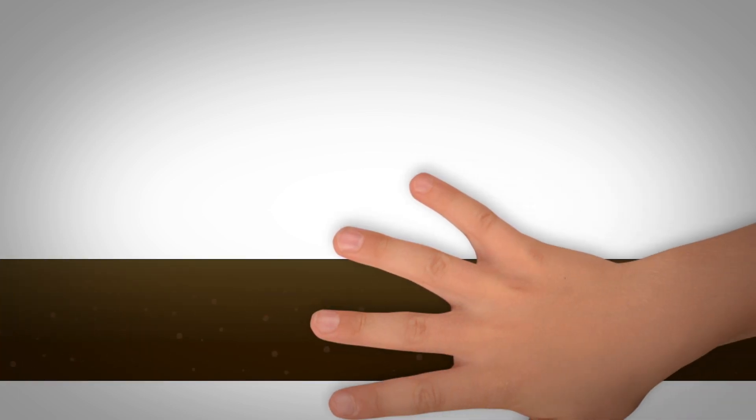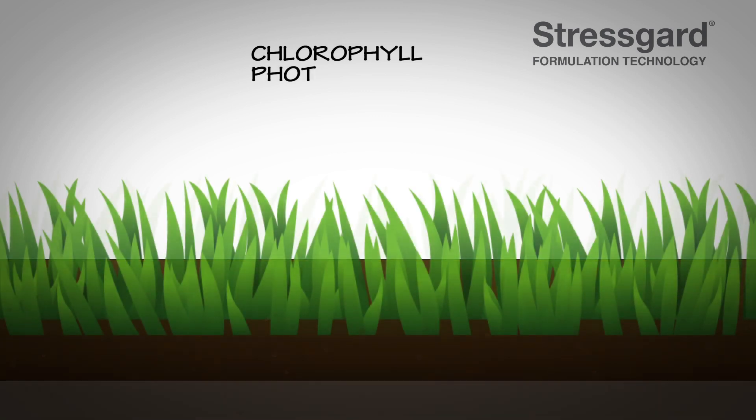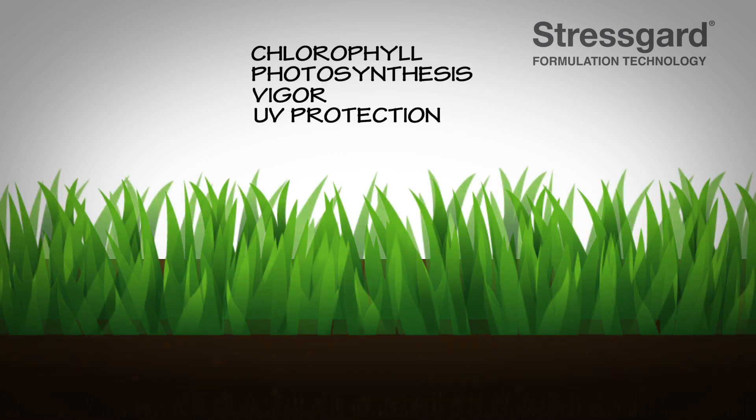Research has shown programmes incorporating Bayer's StressGard formulation technology worked to increase chlorophyll content, improve photosynthesis, encourage stronger, more vigorous plants with robust roots.